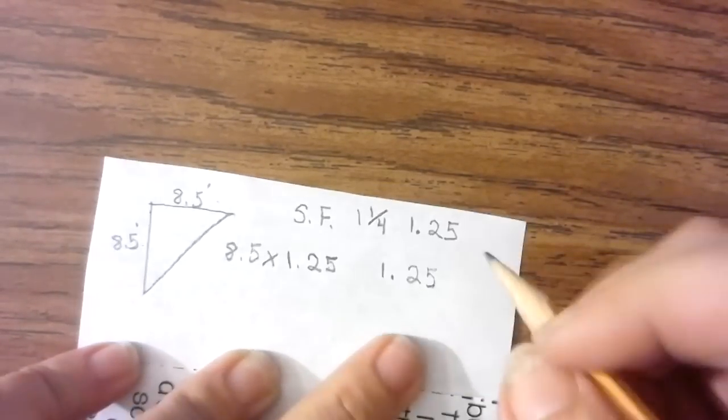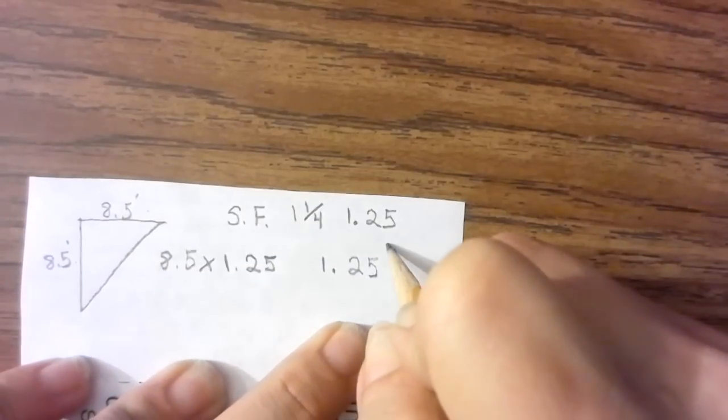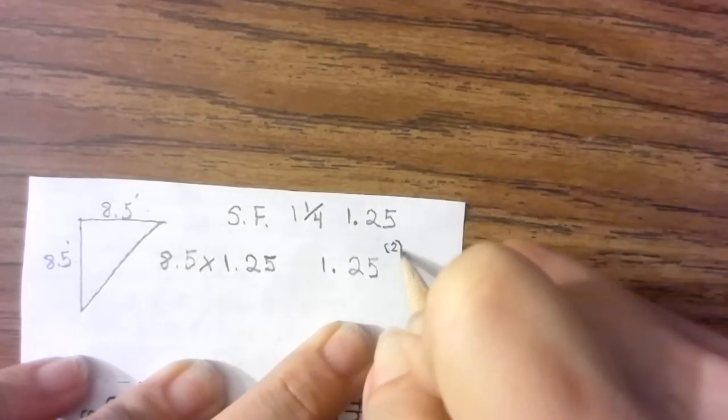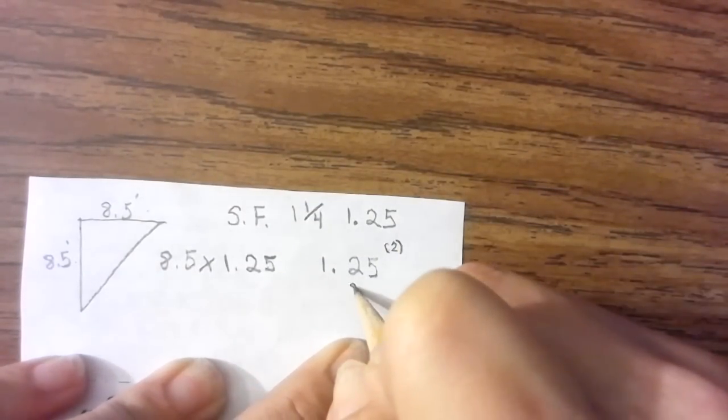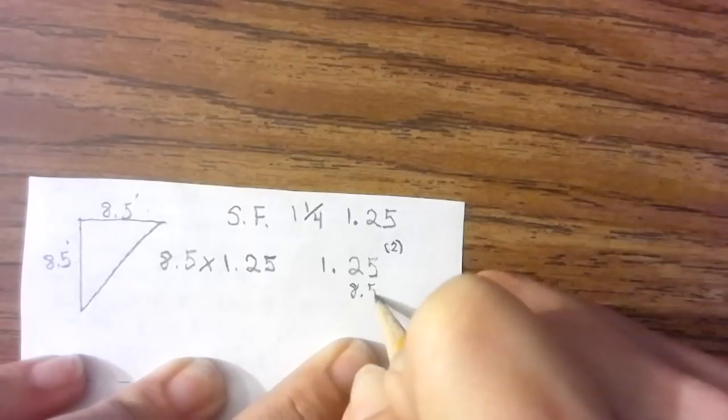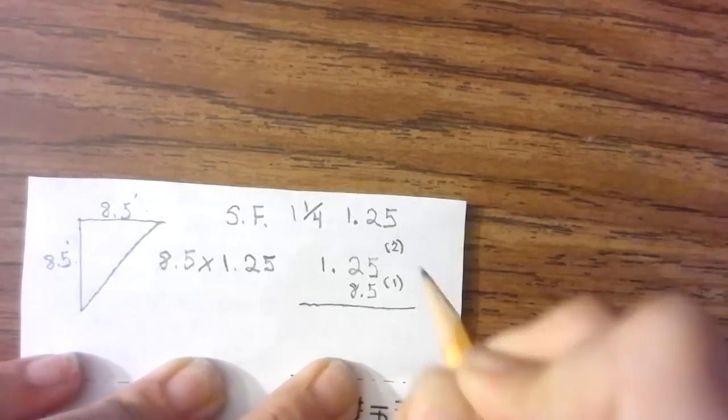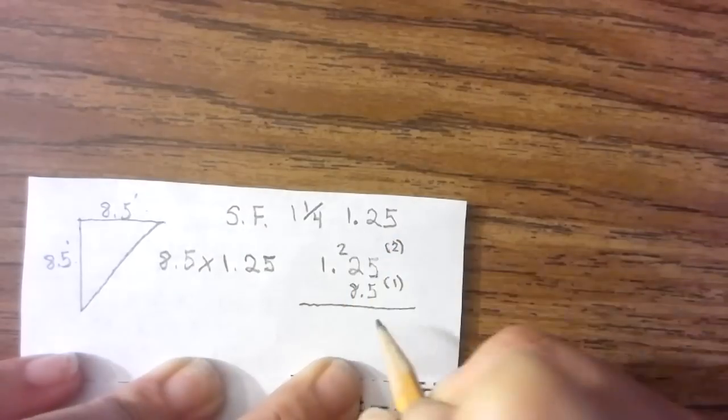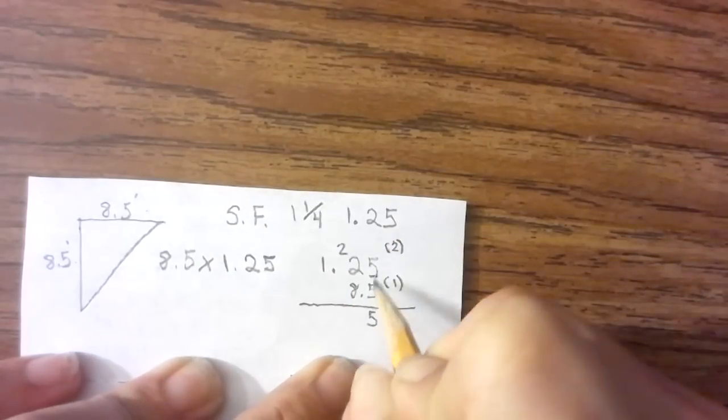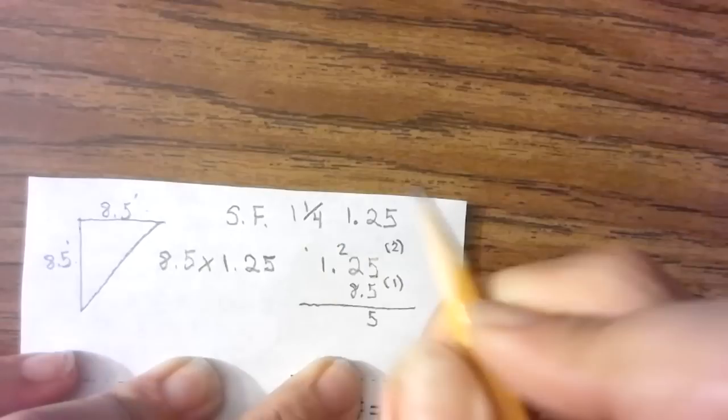Now this is two decimal places so I'm going to put a 2. This is one decimal place. Now I'm going to do my math: 5 times 5 is 25, 5 times 2 is 10 plus 2 is 12.